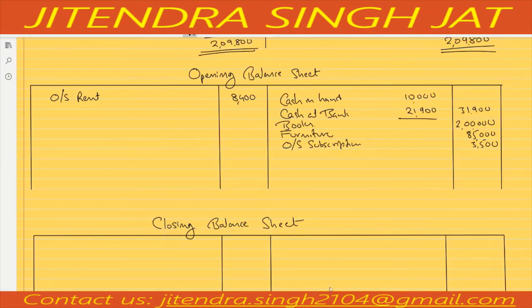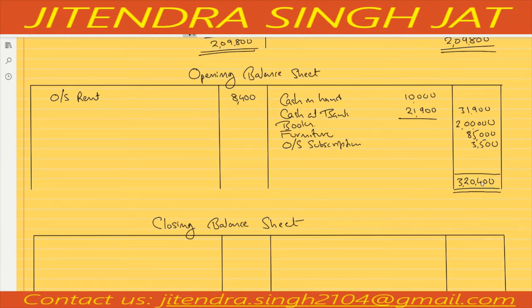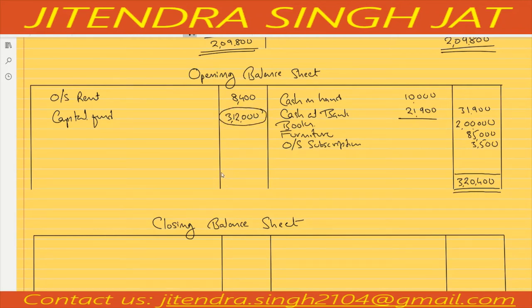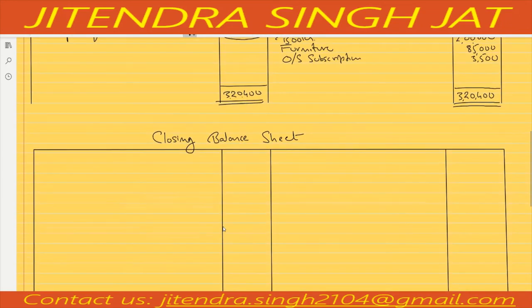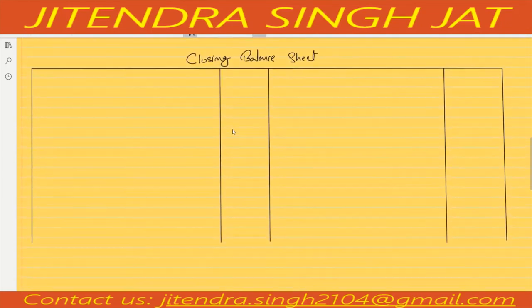Doing the total: asset side comes to 3,20,400. Subtracting liability of outstanding rent 8,400, the balancing figure is 3,12,000, which is the Capital Fund. This Capital Fund from the opening Balance Sheet is now required in the closing Balance Sheet.